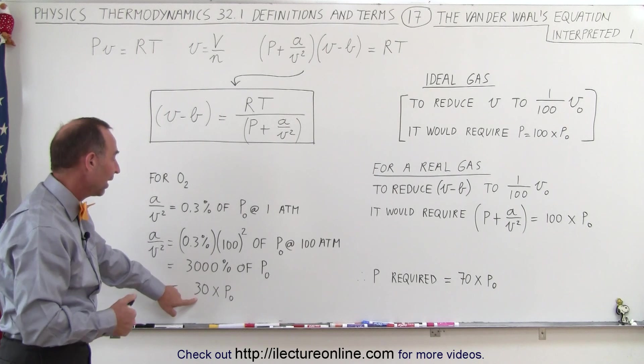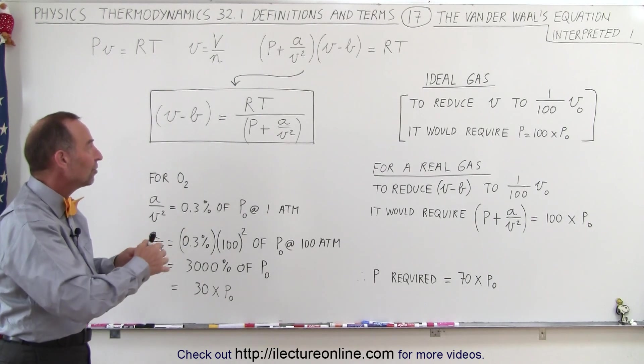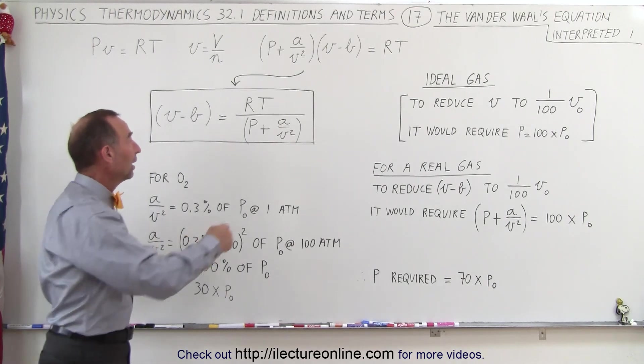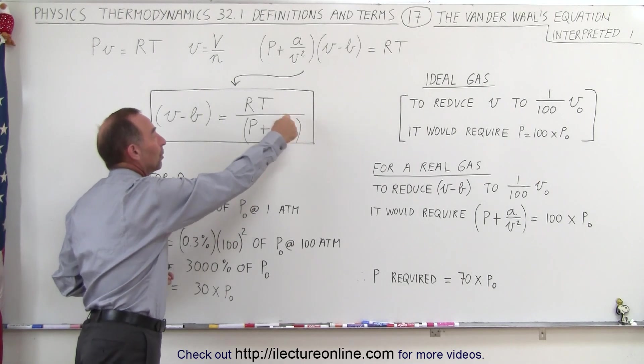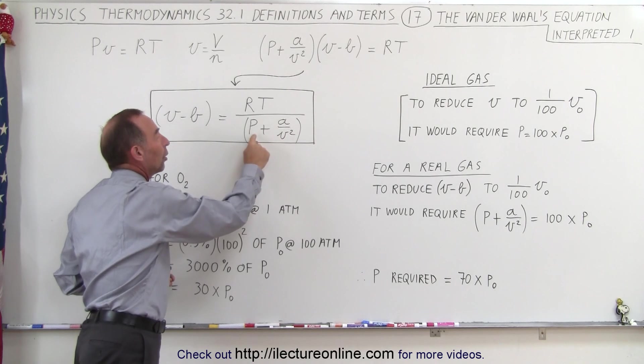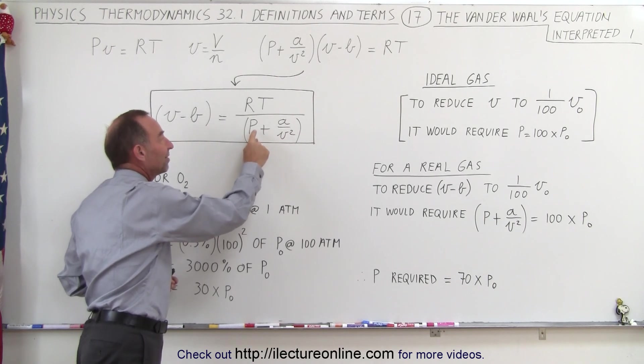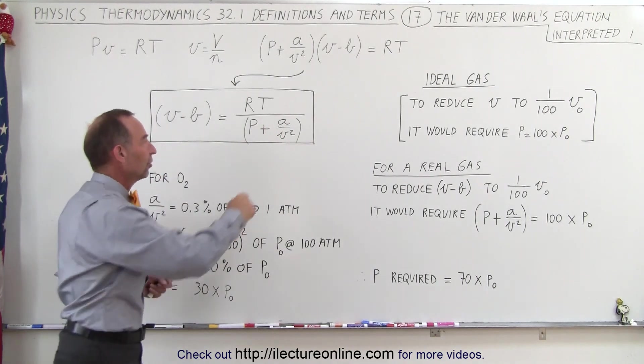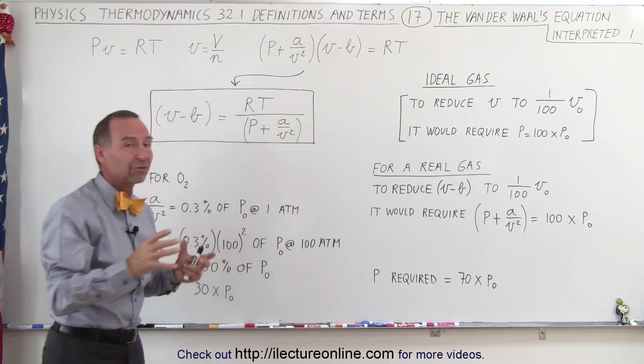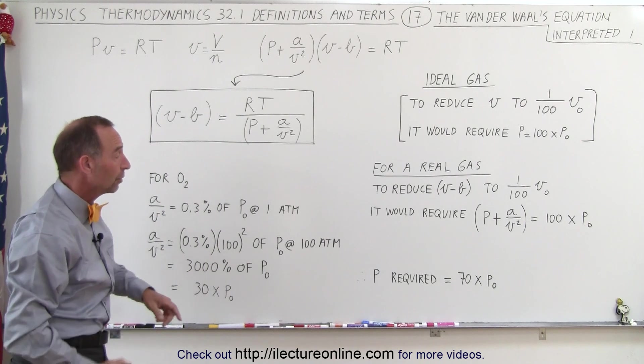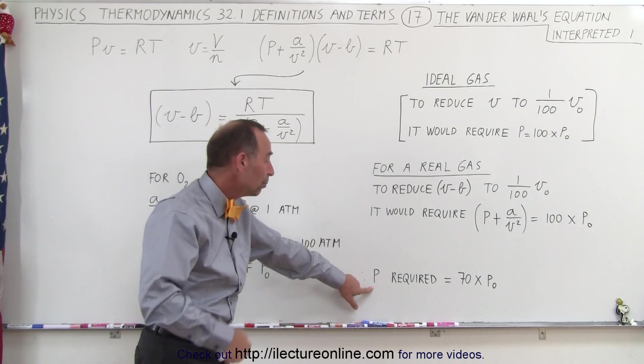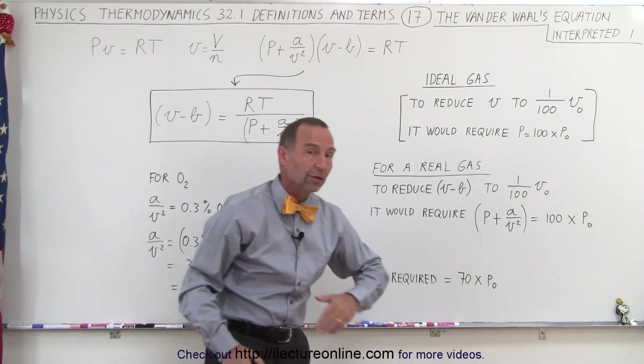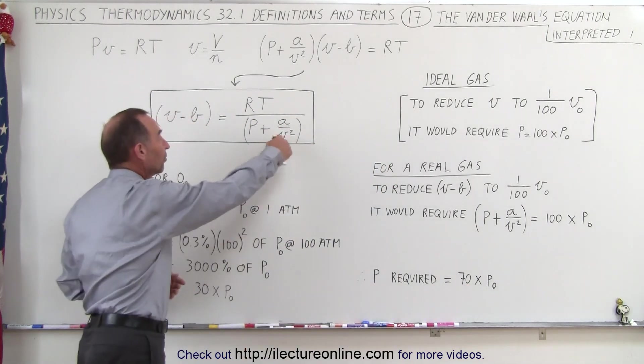And so that means that 30% of the increase now, if we go from 1 atmospheric pressure to 100 atmospheric pressure, is accounted for by the term a/v². So we only need the new pressure to be 70 times the original pressure instead of 100 times, since a/v² accounts for 30% of that total increase. So the new pressure required is 70 times the original pressure, not 100 times, because of this additional term.